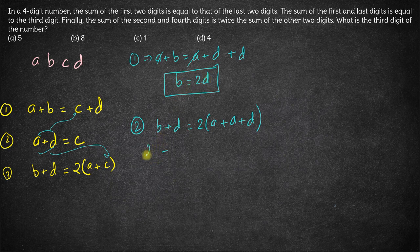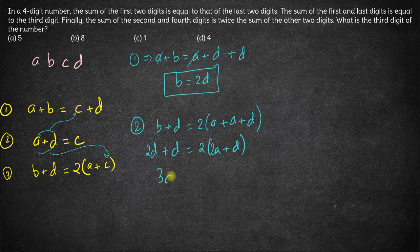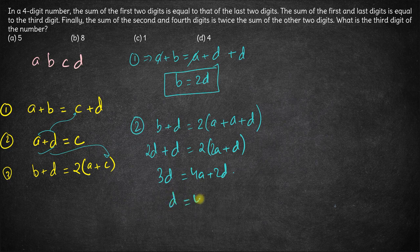So instead of B I write 2D plus D is equal to twice of 2A plus D. So we have 3D is equal to 4A plus 2D. So we get D is equal to 4A.